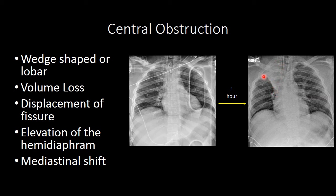How do we know that this is atelectasis? We can see that there is elevation of the right hemidiaphragm. Overall, the lung volume in this hemithorax is greatly decreased compared to the volume in the left hemithorax. Also, this smooth, demarcated line represents the major fissure that has been elevated due to right upper lobe collapse.